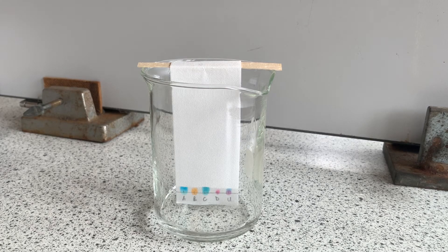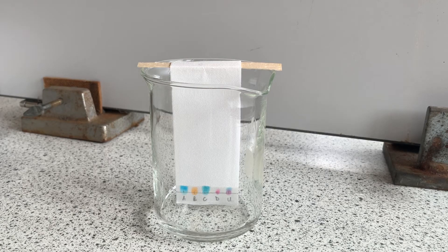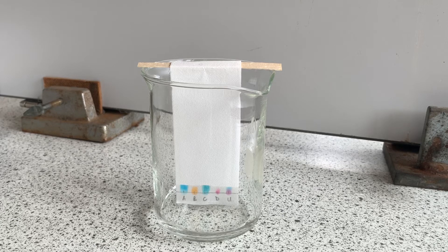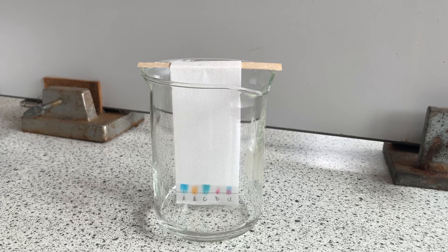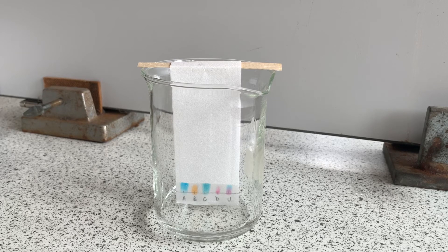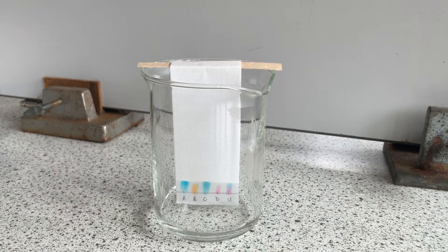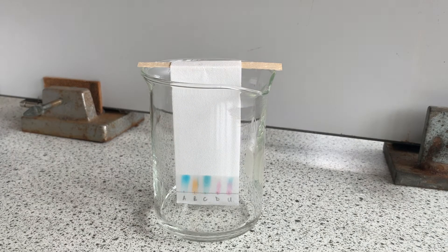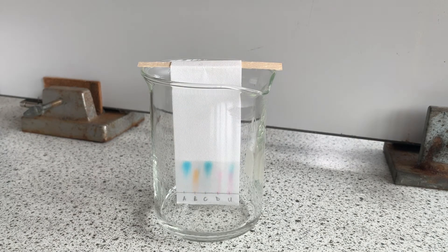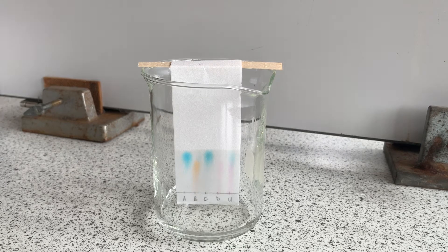Compounds are more soluble in some solvents than others and remember the more soluble a compound is the further it will travel up the paper. Water is found to be a good solvent for these compounds because their different solubilities mean that they travel up the paper at varying distinguishable distances which you can see happening now. I've fast forwarded the video to get to the end of this chromatography.